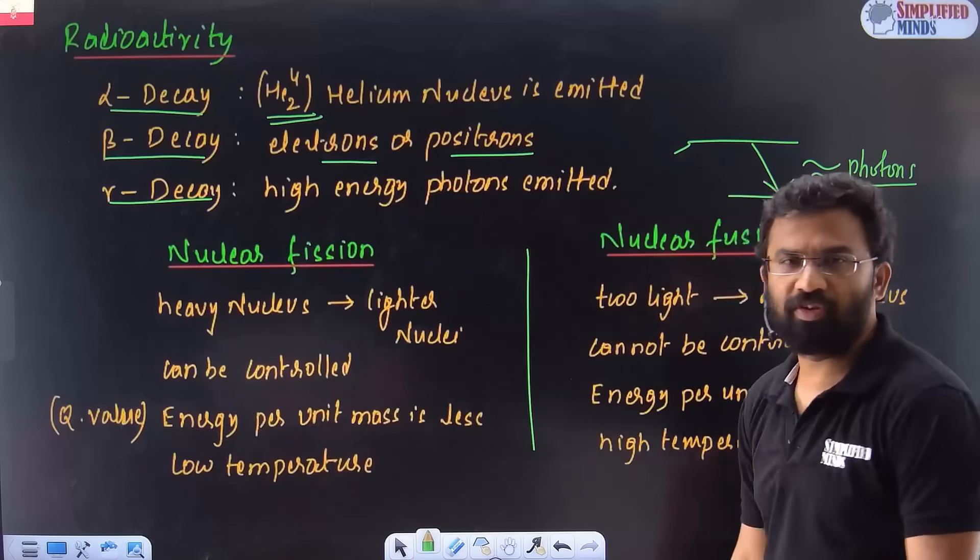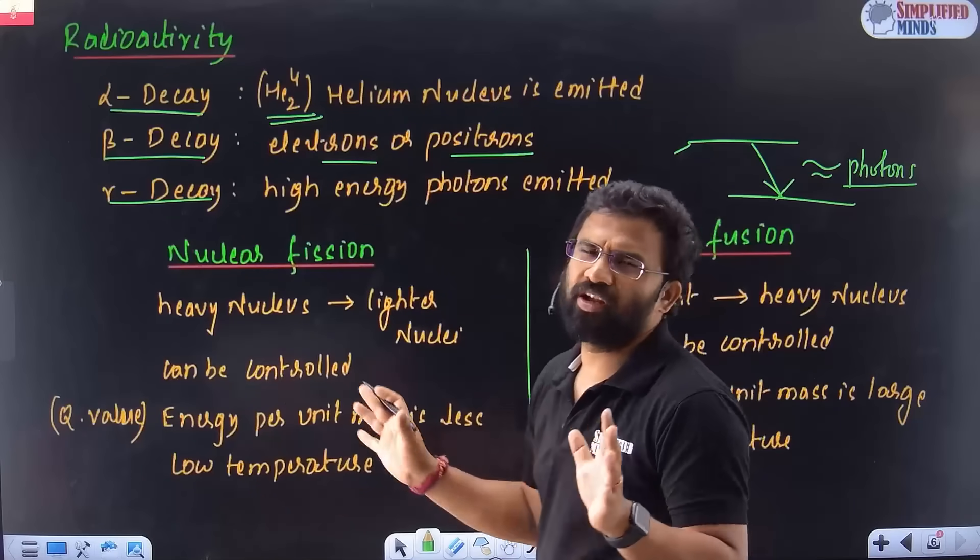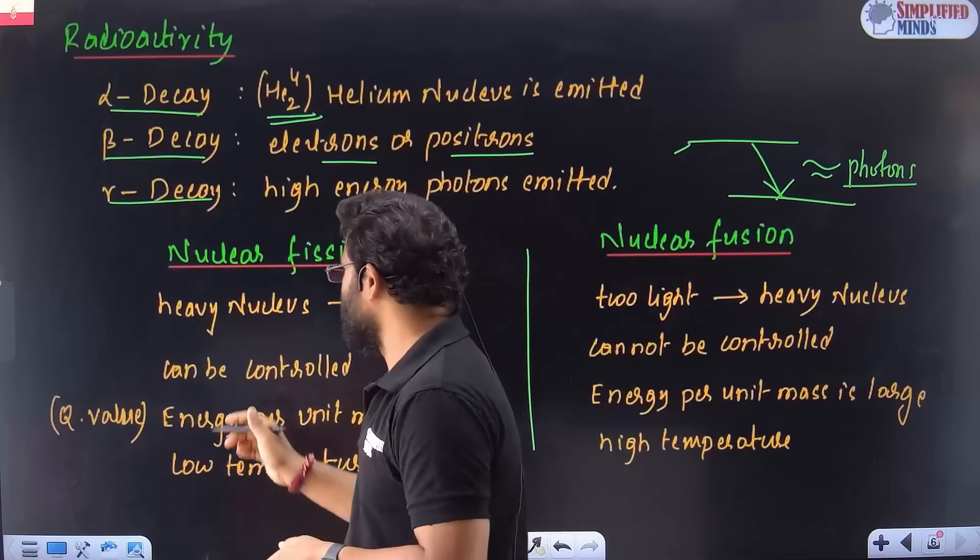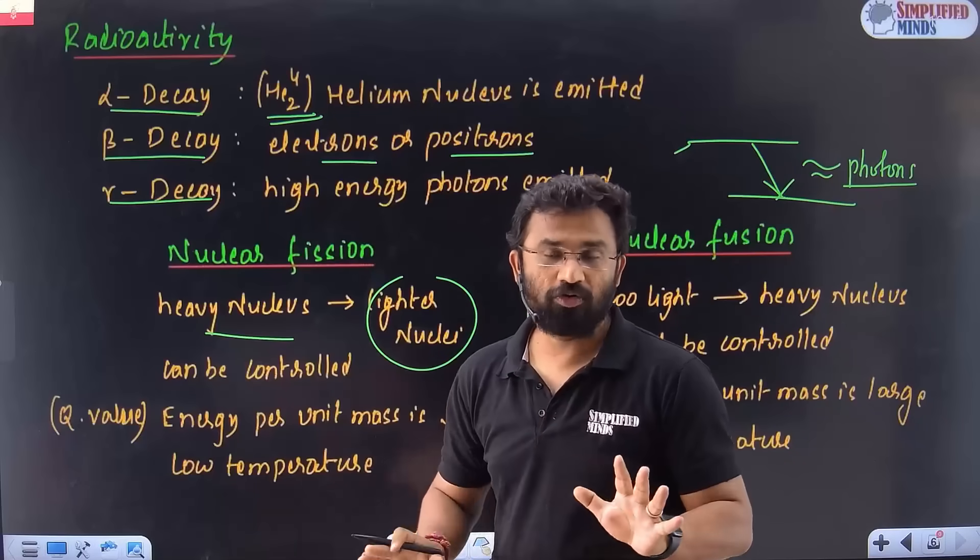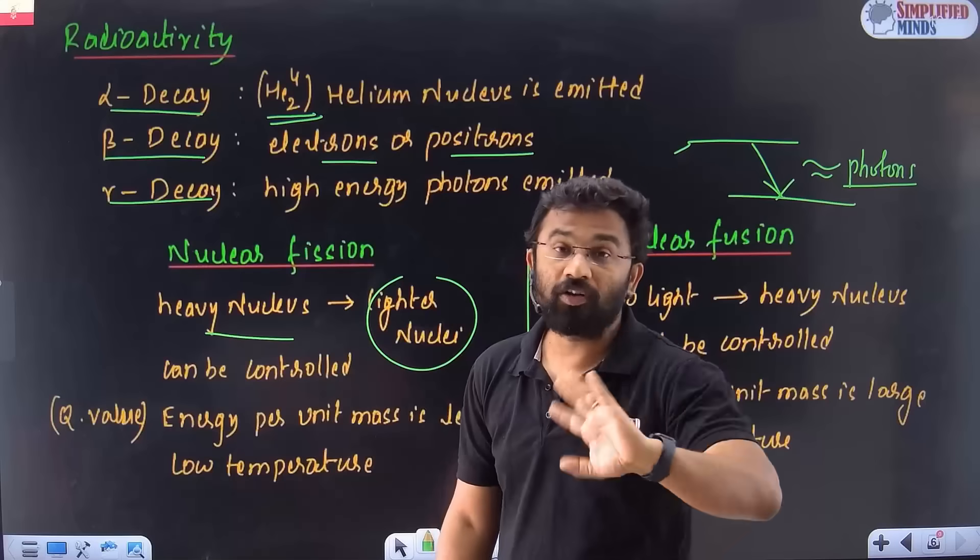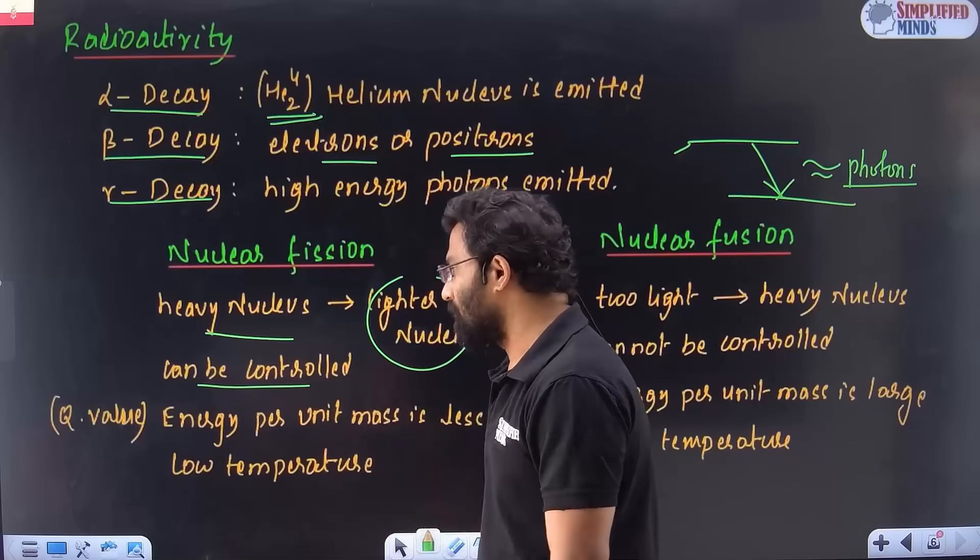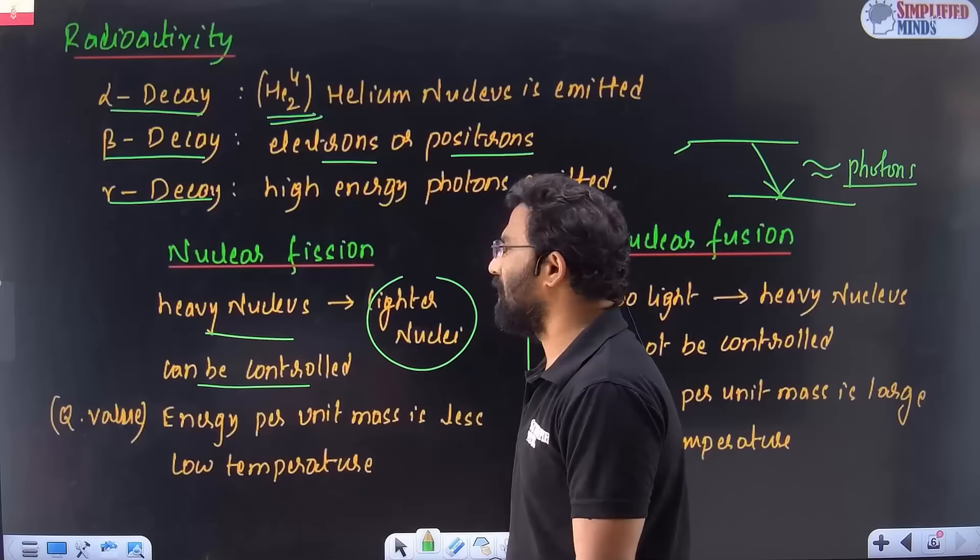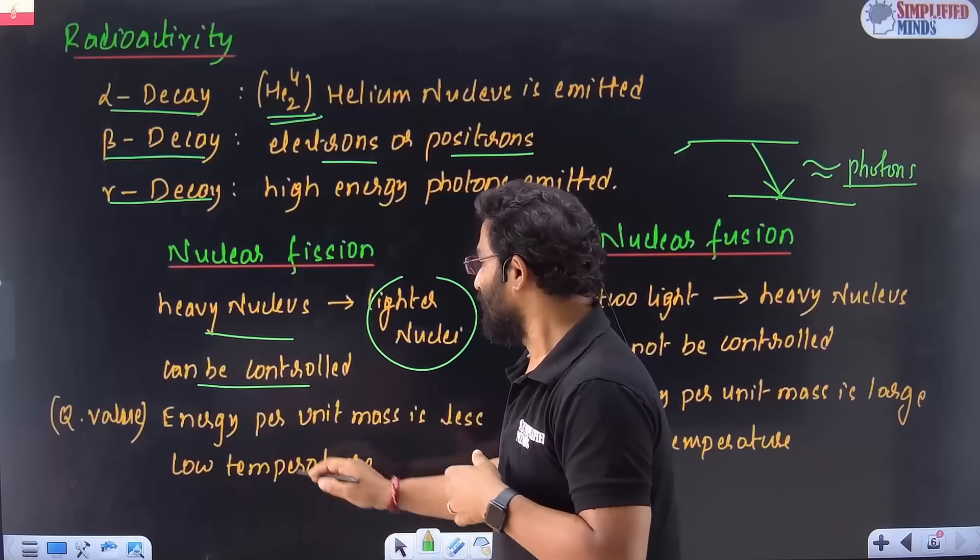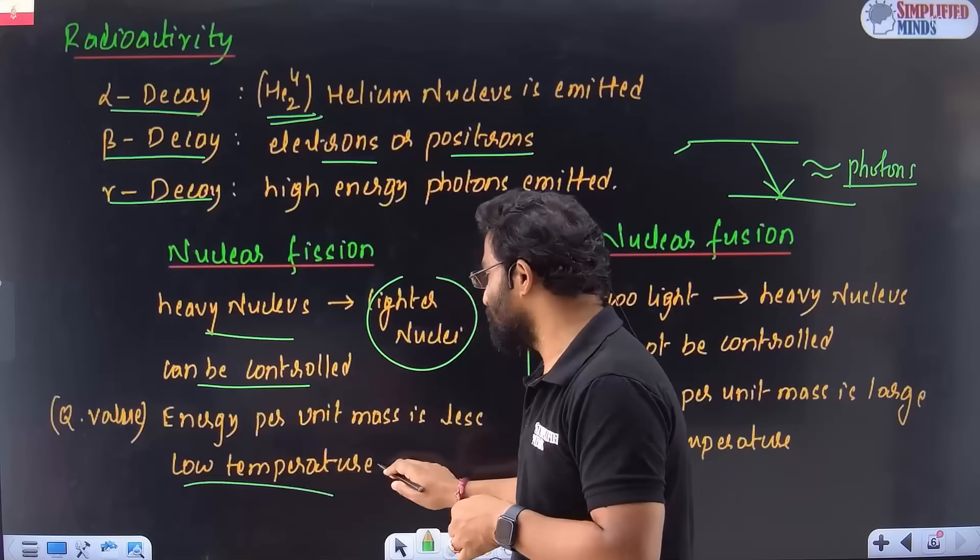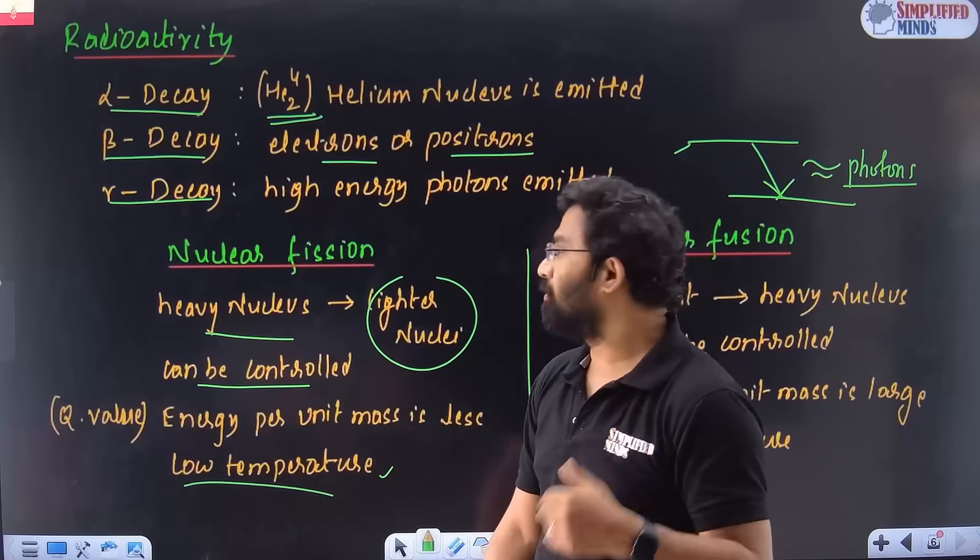Next, so alpha decay, beta decay. They can ask the difference between nuclear fission and nuclear fusion. So what is nuclear fission? Basically, it's a heavy nucleus. Fission, basically, we are going to take a heavy nucleus and break it into two lighter nuclei. That's called fission. And it can be controlled. Fission can be controlled. So what we do, nuclear reactors everywhere, it's a fission reaction, not a fusion reaction. Fusion reaction happens in the sun. Can be controlled, and the Q value, the energy per unit mass is very less in case of fission, compared to fusion, it's very less. Energy per unit mass is very less, and the temperature is very low. Low temperature to carry out the reaction, nuclear fission.